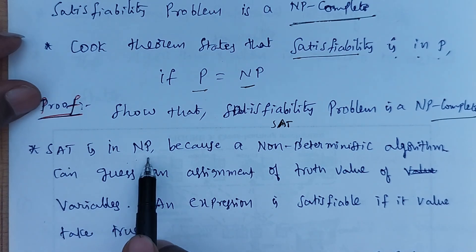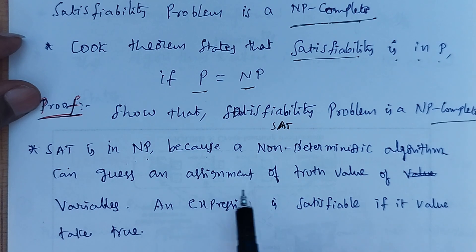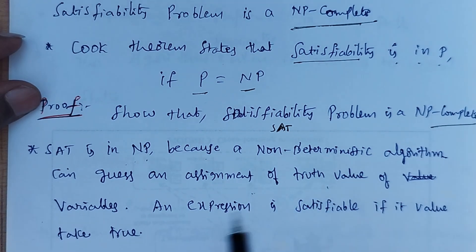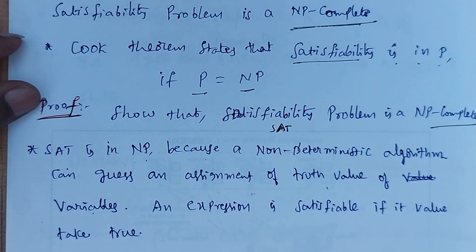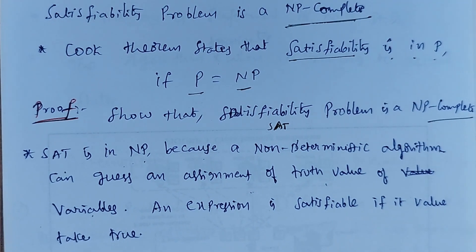SAT is in NP because a non-deterministic algorithm can guess an assignment of truth value of variables, and an expression is satisfiable if it takes true. This is a very simple topic, mostly theory. These are all the theory points we have to write in the exam.